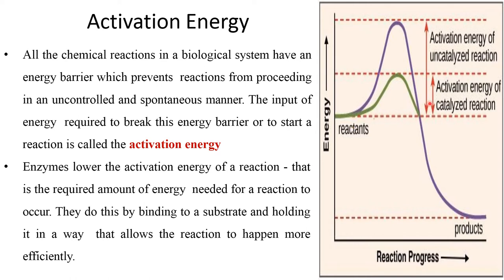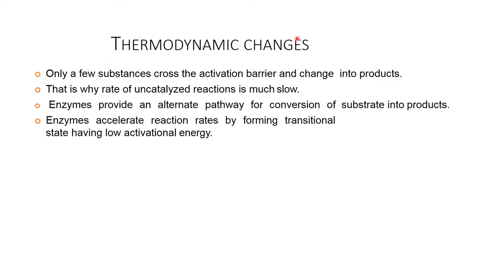Enzymes lower the activation energy of a reaction — that is, the required amount of energy needed for the reaction to occur. They do this by binding the substrate and holding it in a way that allows the reaction to happen more efficiently. As seen here, the activation energy of a catalyzed reaction — where the enzyme was added — requires very less activation energy, whereas without an enzyme it requires high energy. This is the difference between using an enzyme in a reaction and not using one.